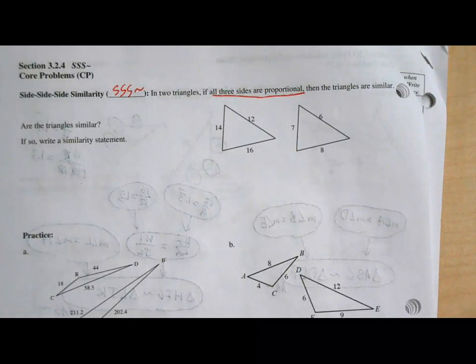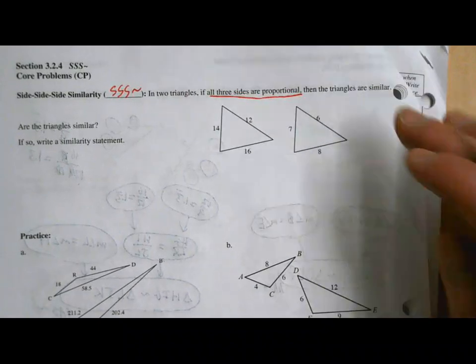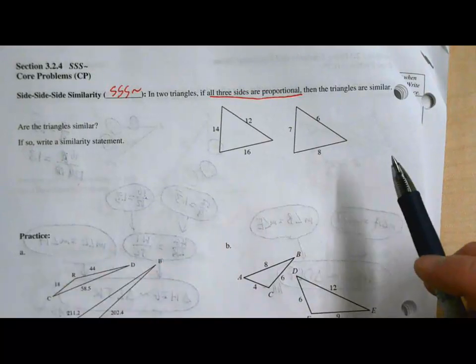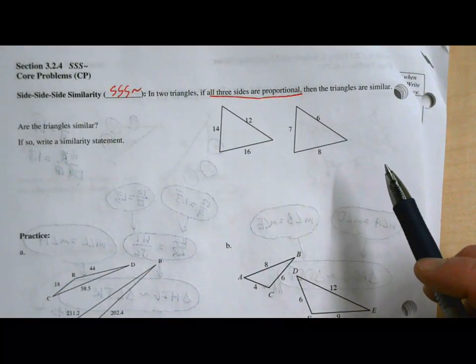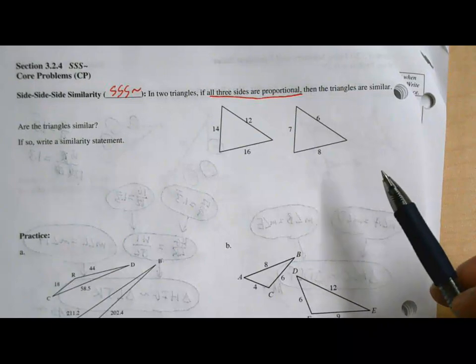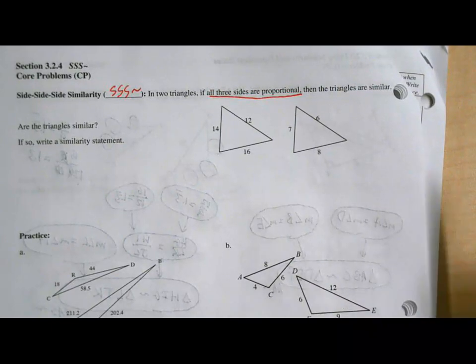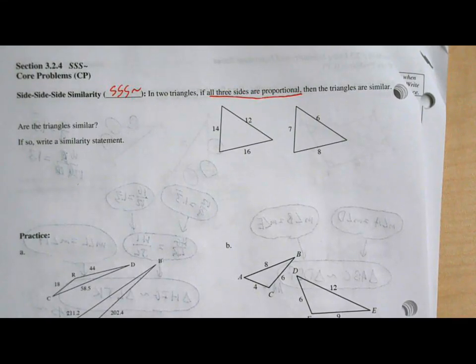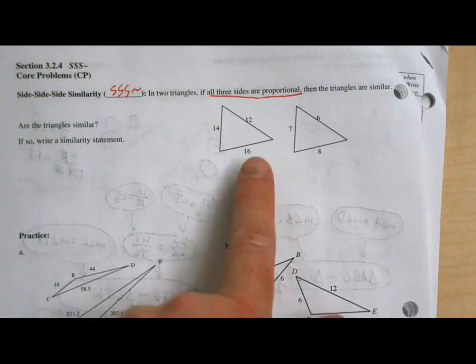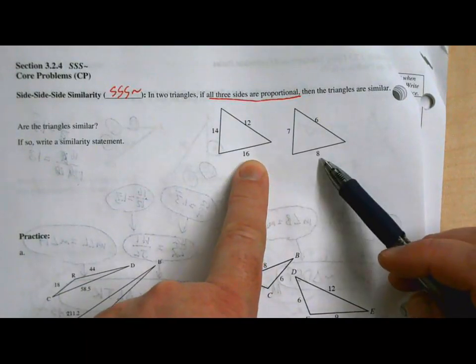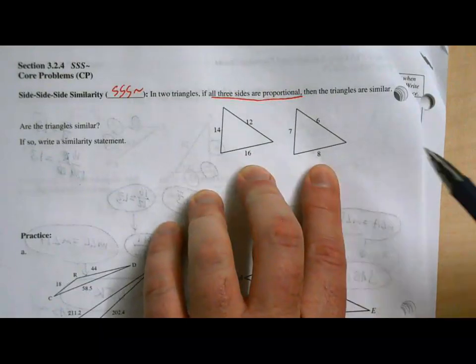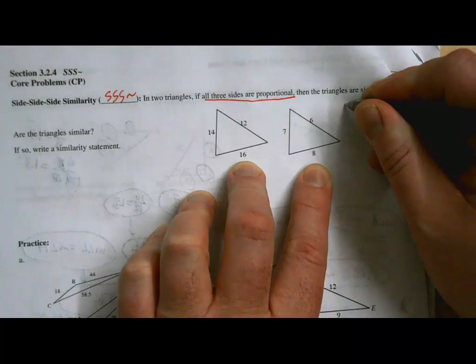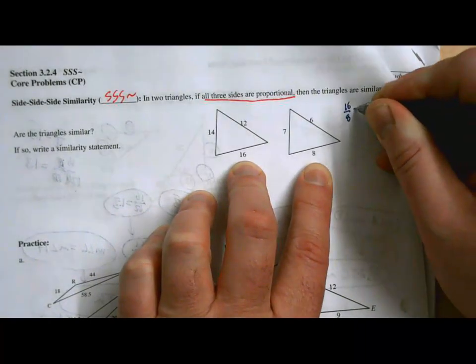So let's check and see if our three sides are proportional by making some ratios. When I do these and I've got SSS, the biggest hint I can give you right now is focus on what's the biggest, what's the smallest, and what's the middle one. What's the biggest side in both of these triangles? The bottom is biggest here and the bottom is biggest here. These two sides go together because they're both the biggest in their triangle. So let's make a ratio out of that: that's 16 and 8, and we know that 16 over 8 is equal to 2.